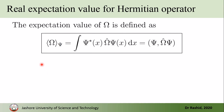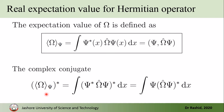First, we look at the property that the expectation value of a Hermitian operator is real. From now on we assume omega-hat is Hermitian. The expectation value of an operator is defined as the inner product (psi, omega-hat psi). If we take the complex conjugate of this, we must take the complex conjugate of the integrand.